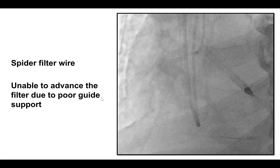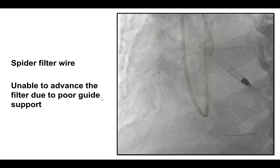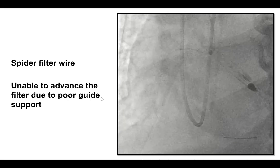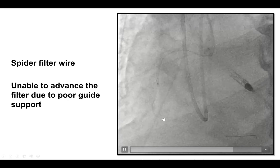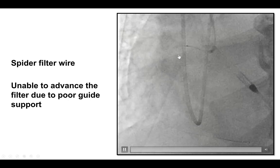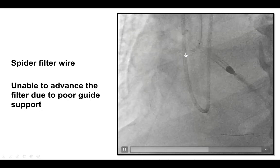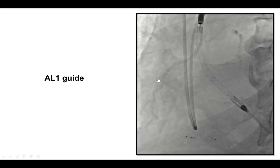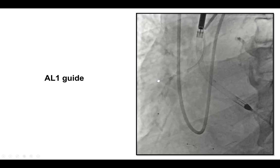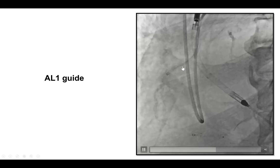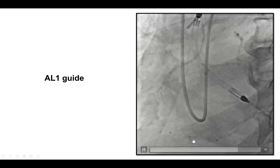We determined that there was a risk of distal embolization given the size of the thrombus, and that is why we decided to use a filter embolic protection device — specifically the Spider device. The Spider device is used by first using a workhorse wire to wire through the lesion, as was done in our case. The Spider device is then delivered over this guide wire, but in our case it was not possible to advance it through the mid-right coronary artery. As a result, we upsized our guide to a 7-French AL1 guide that fit well and provided strong support, and we were then able to deliver the Spider filter distal to the lesion.